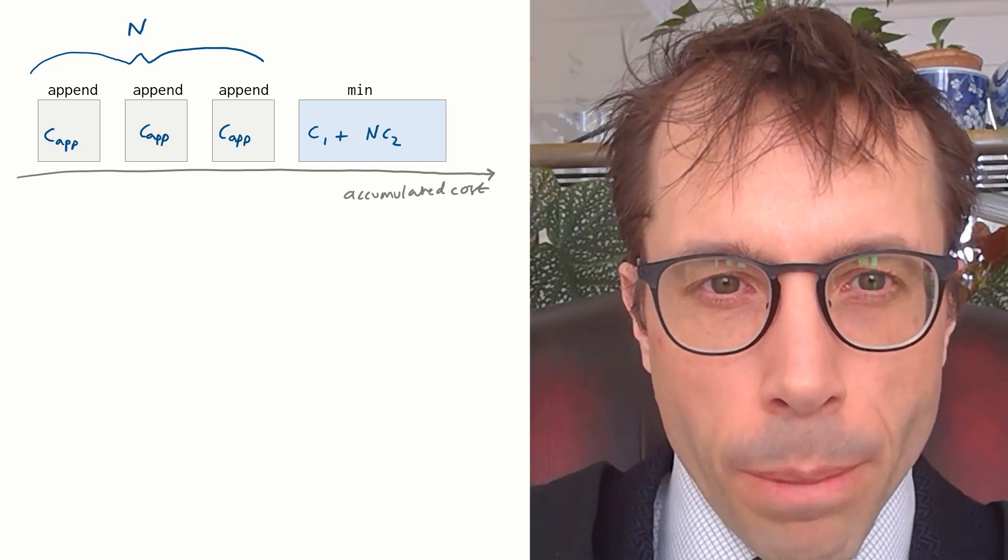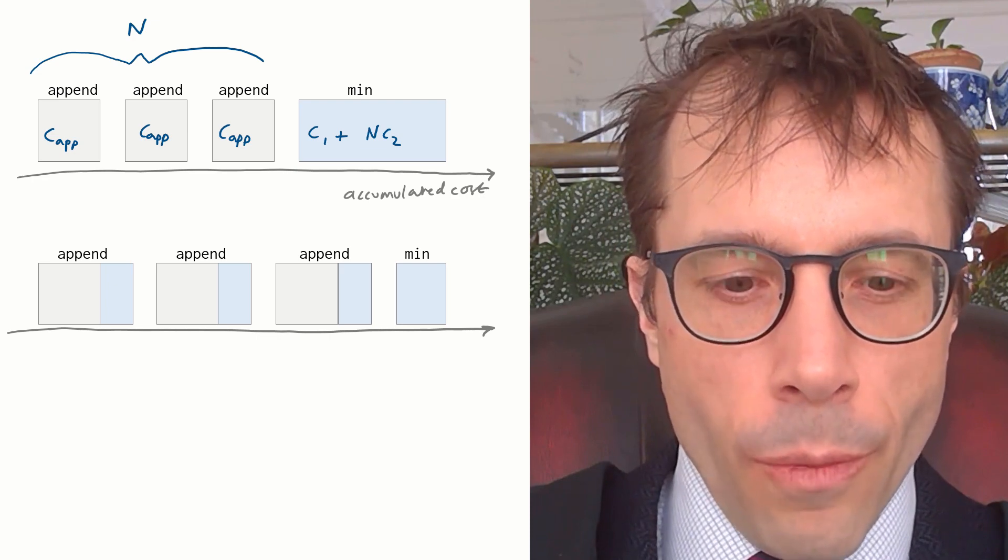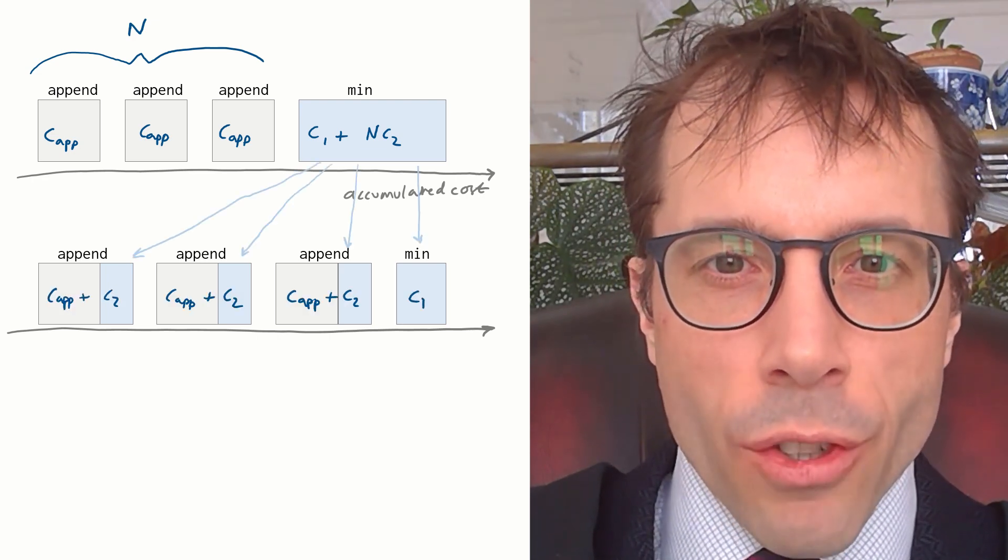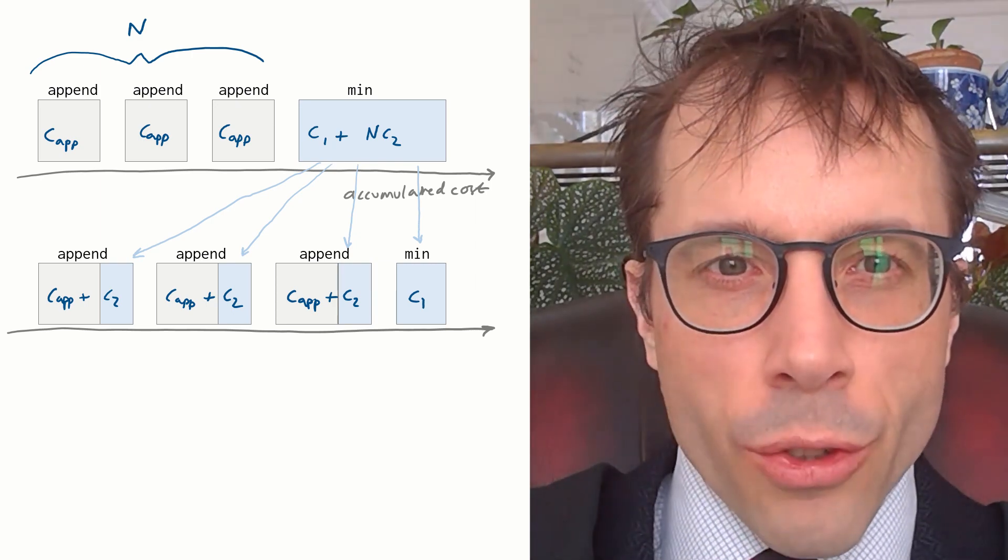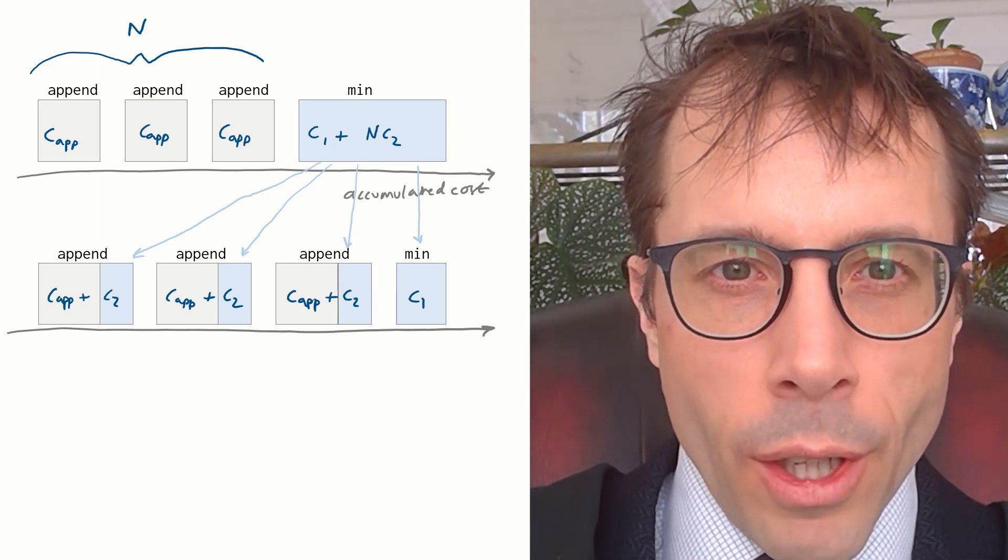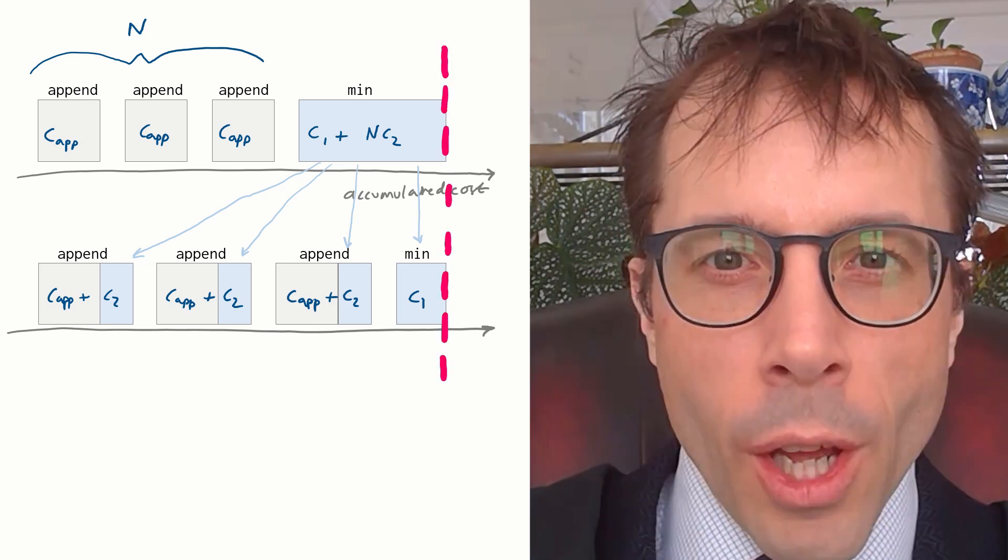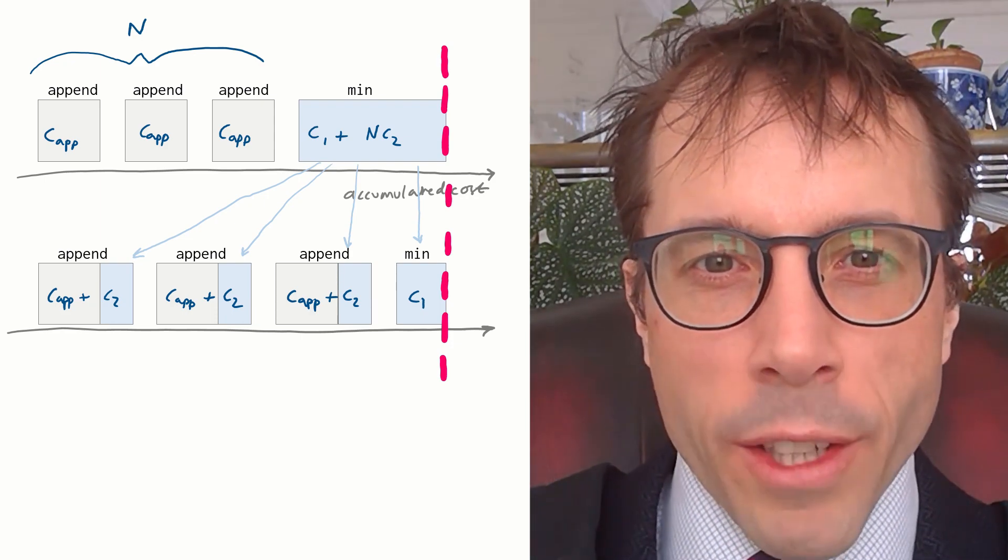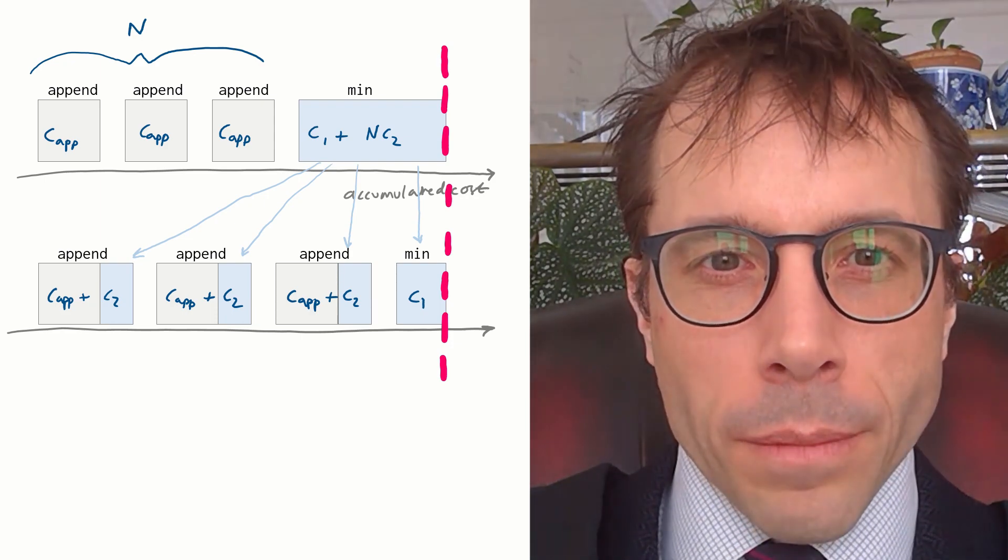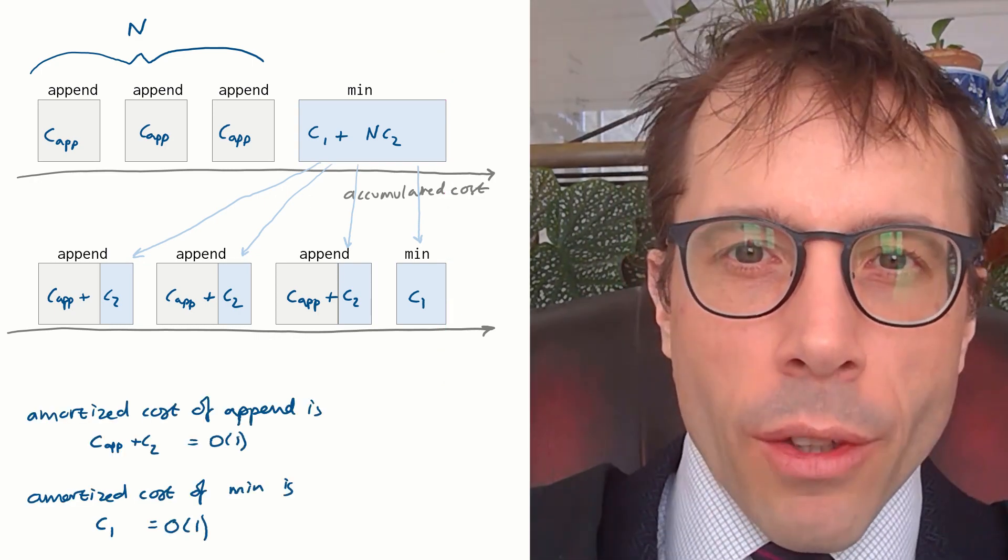Now here's the big idea. Let's take that cost c1 plus n times c2 and ascribe it to some of the earlier operations. Let's ascribe c2 to each of the appends, leaving just c1 to ascribe to the min. This is purely for accounting purposes. There's no sense in which we've changed the actual running time of anything, and in fact we use the word borrowed from accounting to describe this. We'd call these costs that we've described amortized costs.